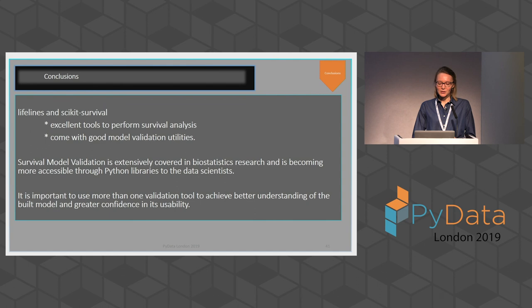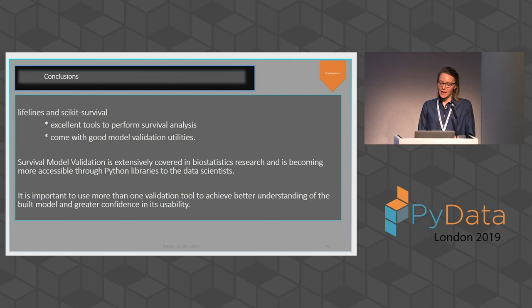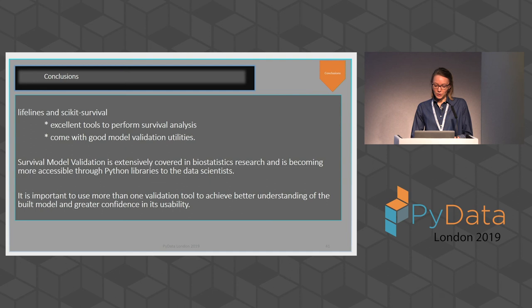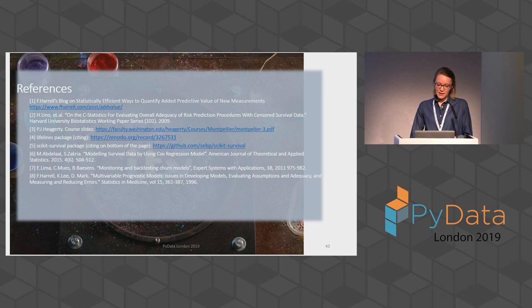In conclusion, lifelines and scikit-survival are both excellent tools to perform survival analysis and build client churn models, and they come with very good validation utilities. Survival model validation is extensively covered in medical statistics and biostatistics research, and it's gradually becoming more accessible through Python libraries for data scientists. It's important to use more than one validation technique to actually gauge the accuracy of your model. Here are the references for those who are interested — thank you very much.